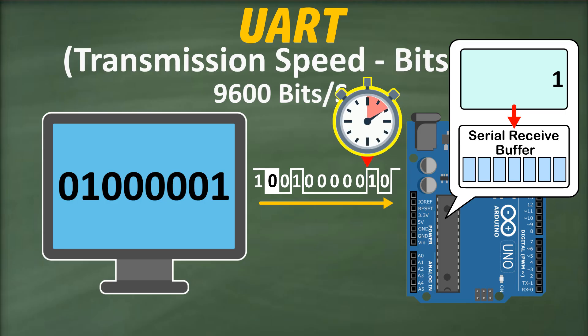...it waits an additional 52 microseconds to reach the middle of the bit duration before capturing its value. It again counts 104 microseconds to reach the middle of the second bit, reads the second bit, and repeats the process for subsequent bits, ensuring accurate data reception.